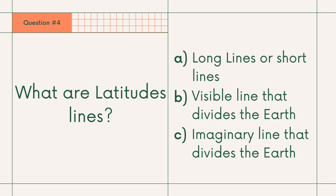Question number 4: What are latitude lines? A. Long lines or short lines, B. Visible lines that divide the earth, or C. Imaginary lines that divide the earth. Answer: C. Imaginary lines that divide the earth.